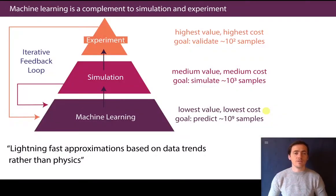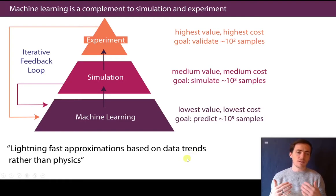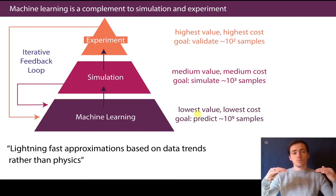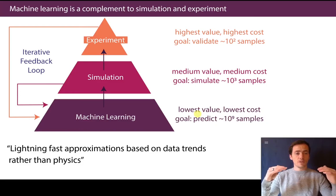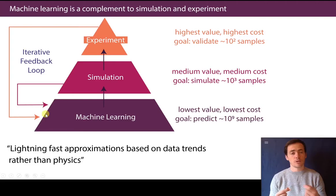This leads to the idea of using machine learning and data science. You can start with machine learning — since it's very fast and based on data trends, it allows us to make predictions. These aren't as good as calculations or measurements, but they're lowest cost and can be done really fast — billions of predictions very, very quickly. We can then take the best predictions and run simulations on those: medium value, medium cost, physics-based. Then the ones that look good move to experimental validation, our highest value but highest cost step. Even when you get something wrong, the iterative feedback loop only makes your machine learning algorithm better as you provide more data.